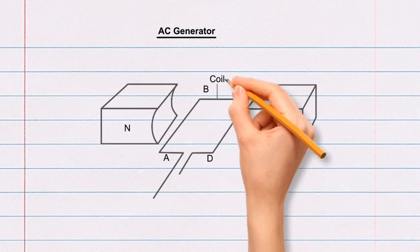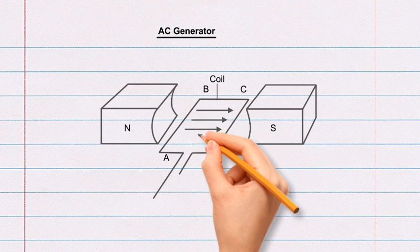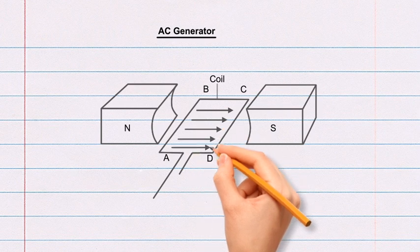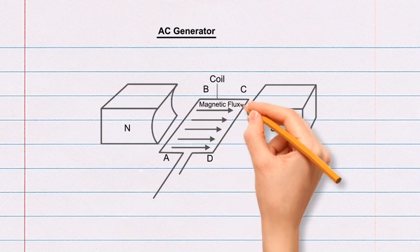Label the parallelogram as coil. Inside the parallelogram ABCD, draw five horizontal arrows pointing rightwards and parallel to each other. Label these arrows as magnetic flux.